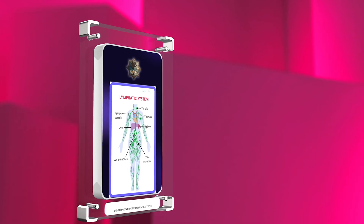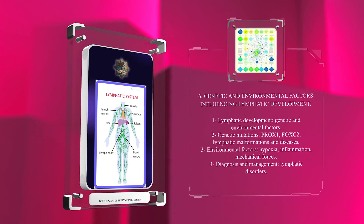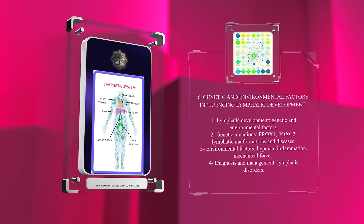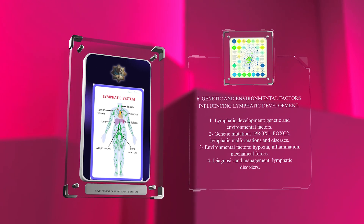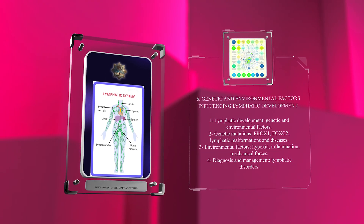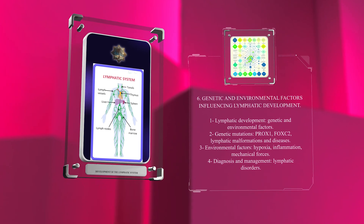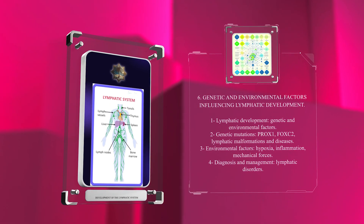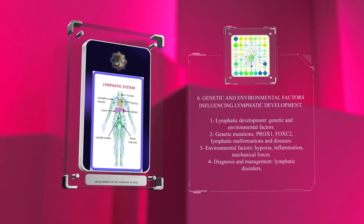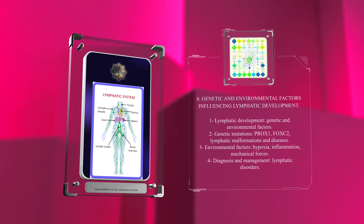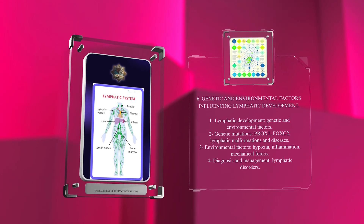Lymphatic development is governed by a complex interplay between genetic and environmental factors. Genetic mutations in key regulators of lymphatic development, such as PROX1 and FOXC2, can lead to lymphatic malformations and diseases. Additionally, environmental factors such as hypoxia, inflammation, and mechanical forces play crucial roles in shaping lymphatic vessel development. Understanding the influence of genetics and the environment on lymphatic development is essential for the diagnosis and management of lymphatic disorders.